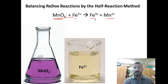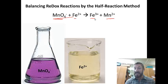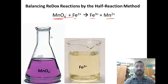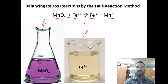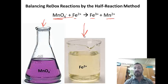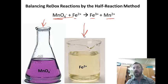We're going to use the following reaction as our example: a potassium permanganate solution — the purple solution you see in the Erlenmeyer flask — reacting with an iron-2 nitrate solution, seen in the beaker. Notice that potassium is a spectator ion, so we didn't bother writing it down, and nitrate is also a spectator, so we left that out as well.